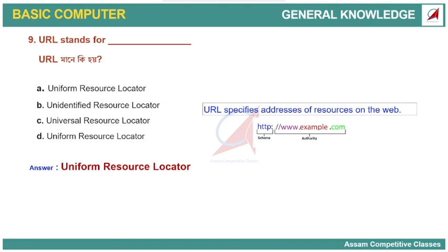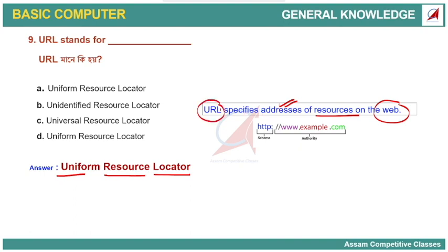URL stands for Uniform Resource Locator. The URL is used for videos and links. What does URL do? The URL is a resource for the web — it is the specific address for a particular resource on the web. The specific address is the URL, Uniform Resource Locator.